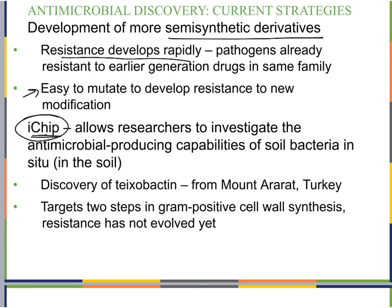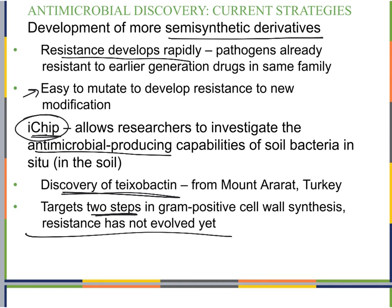The iChip is a device that allows researchers to investigate the antimicrobial-producing capabilities of soil bacteria while they remain in the soil — in situ. This approach has led to the discovery of teixobactin, found in soil from Mount Ararat in Turkey. This antimicrobial targets two steps in gram-positive cell wall synthesis, and no resistance to it has been observed yet. The iChip strategy of searching for new antimicrobials directly in soil represents another important current strategy.